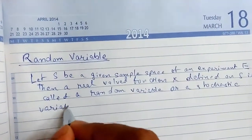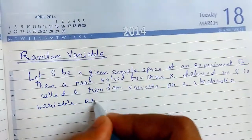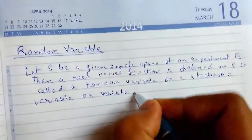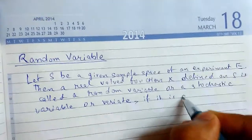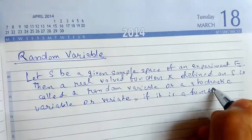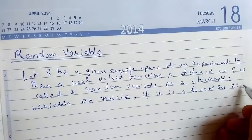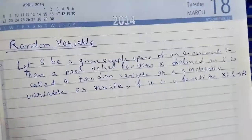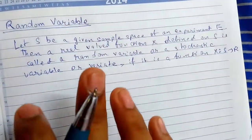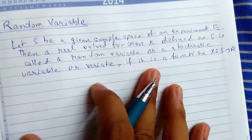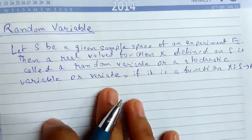Or sometimes called as variate if it is a function like x dot r. So thus for every point of S, the sample space, we have a unique real value of x. So this is a random variable.